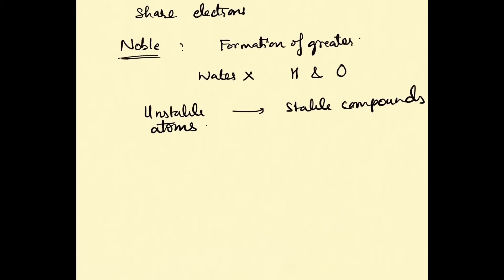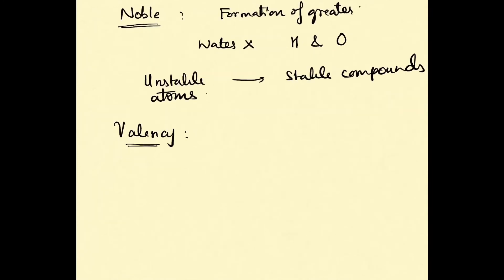I'd like to define the term valency: it is the combining capacity of an element to attain a stable configuration. For example, sodium has the atomic number of 11.